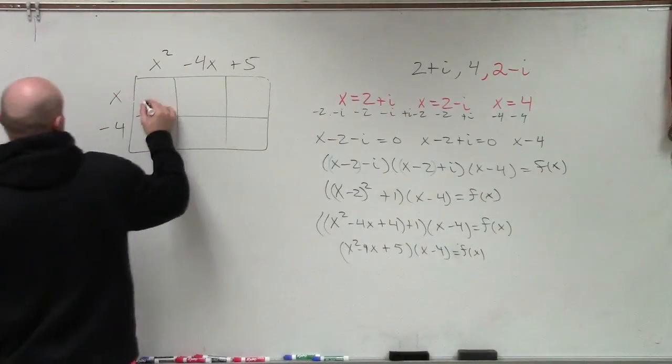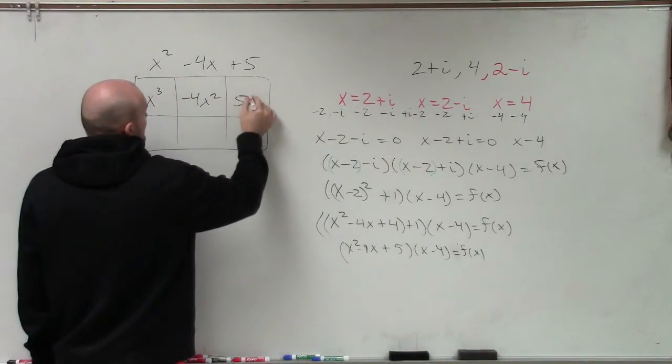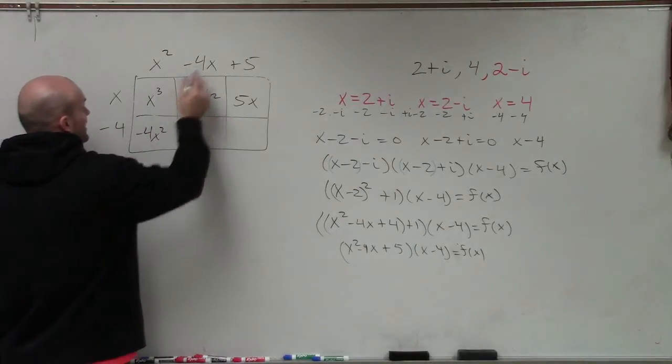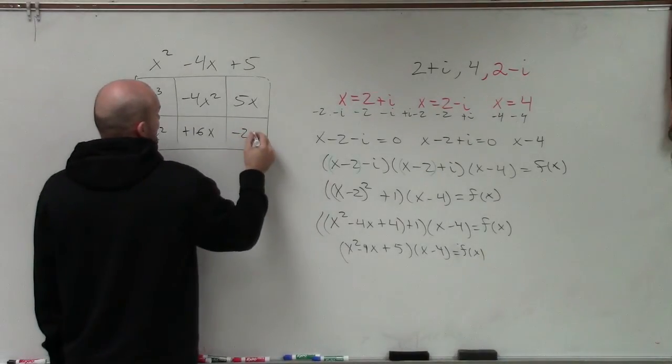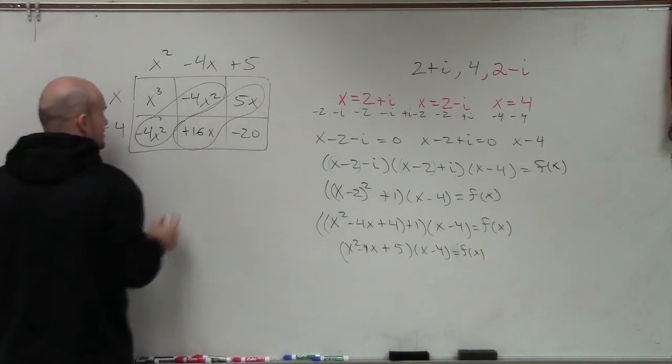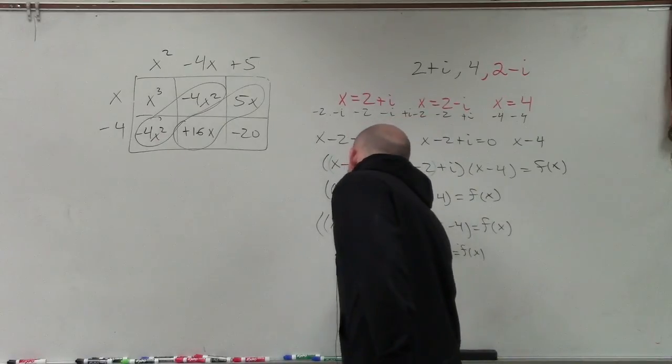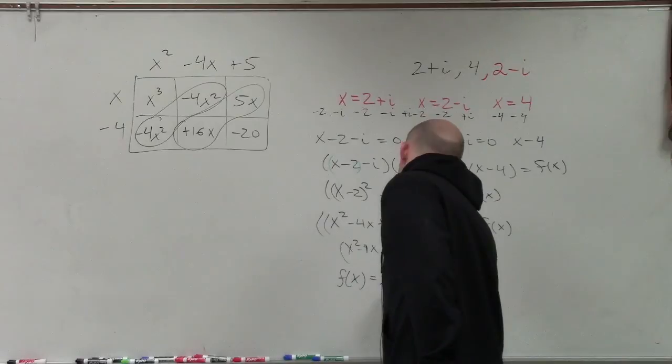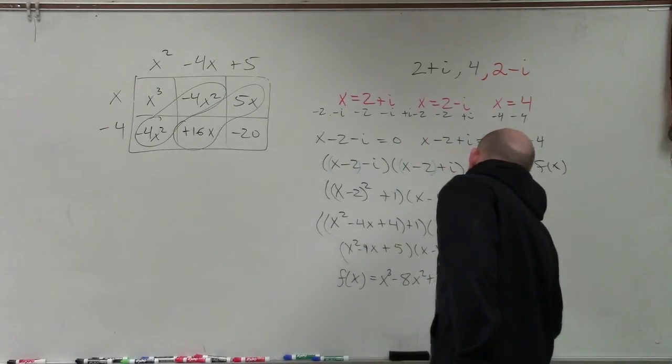And that's going to help me multiply. So x times x squared is x cubed. x times negative 4x is negative 4x squared. x times 5 is 5x. x squared times negative 4 is negative 4x squared. Negative 4 times negative 4 is a positive 16x. And negative 4 times 5 is going to be a negative 20. Now you can see I can combine these two terms and combine these two terms. Therefore, my final product is going to be f of x equals x cubed minus 8x squared plus 21x minus 20.